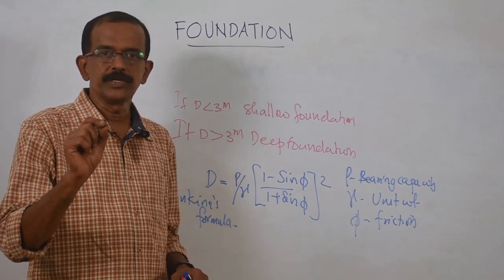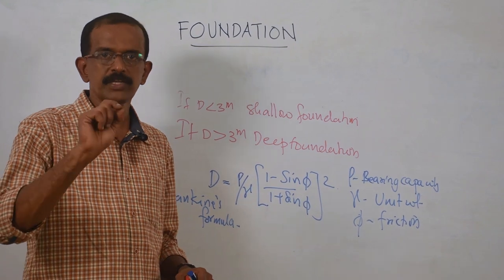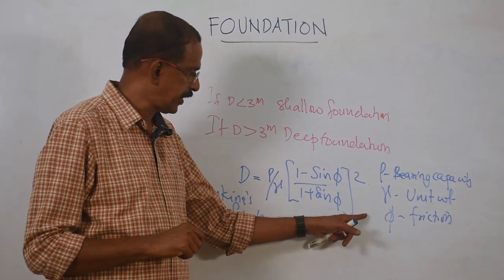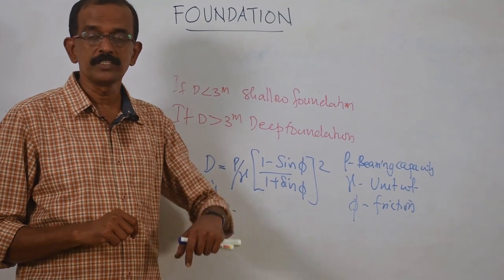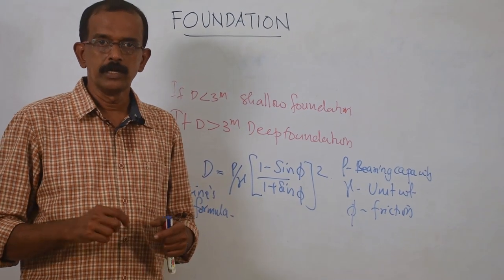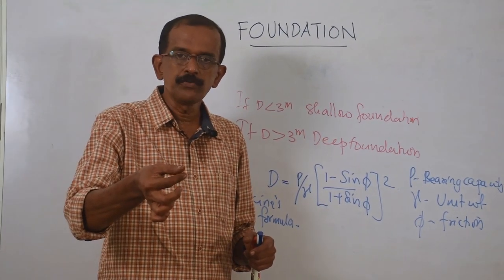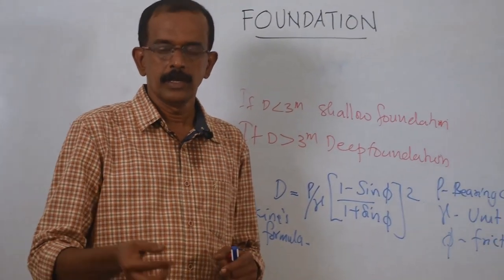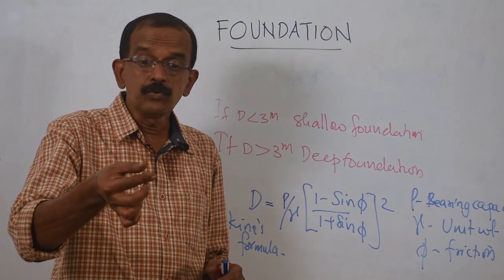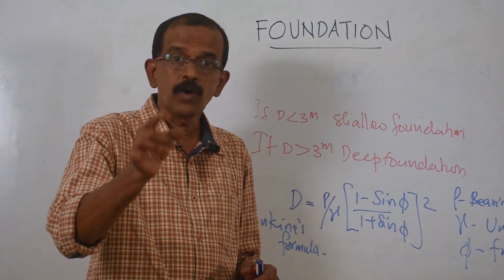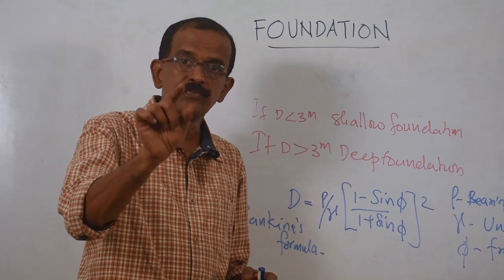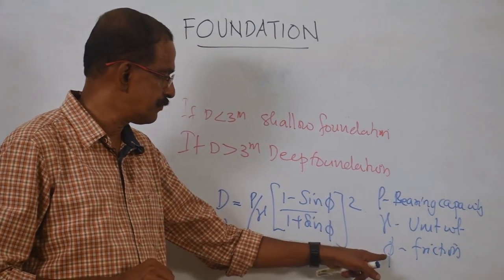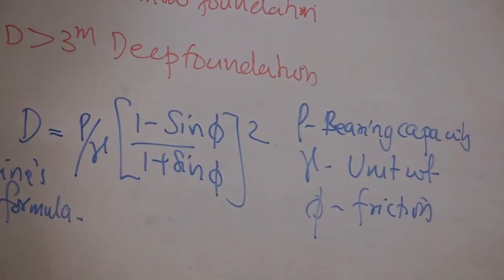Gamma (γ) is the unit weight — mass divided by volume — the density of the soil. Phi (φ) is the friction of the soil. If you rub talcum powder you feel smoothness, but if you rub sand you feel friction — that is phi, the friction of the soil.